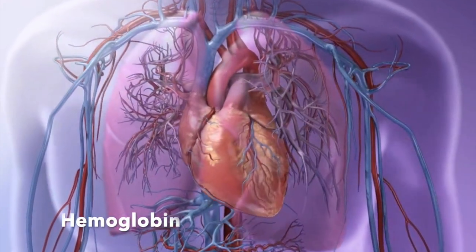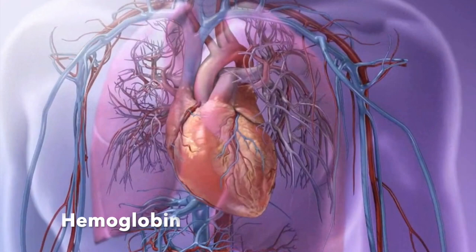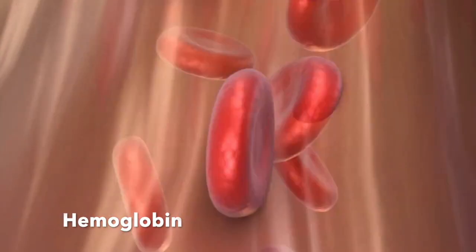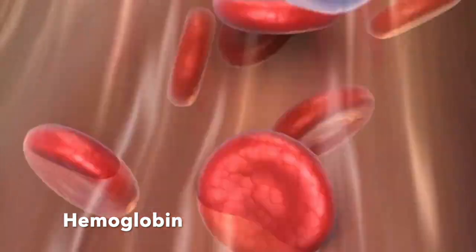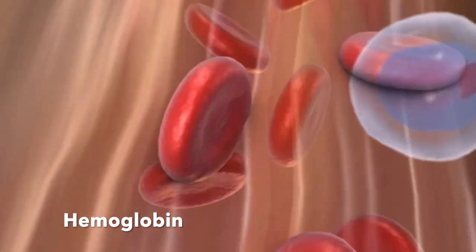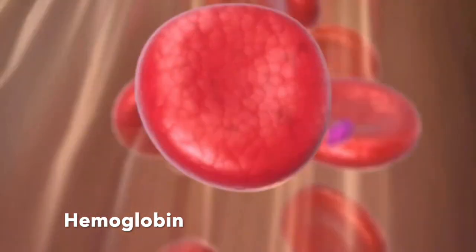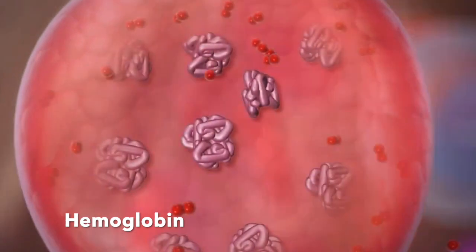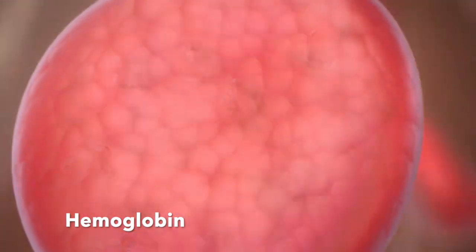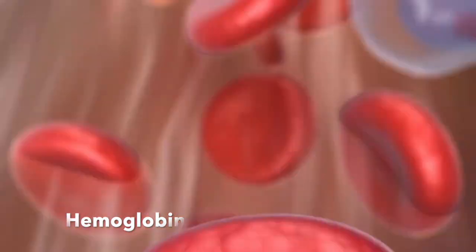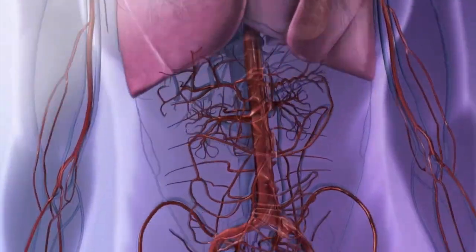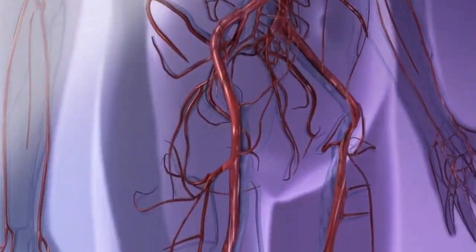Oxygen is carried to the muscle by two delivery systems. 3% of oxygen is carried in plasma and 97% is in hemoglobin, which is the principal protein in erythrocytes, or red blood cells. If hemoglobin amounts are increased, this will lead to increased oxygen levels that can be transported to the muscles, therefore allowing the muscles to become more fatigue resistant.